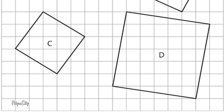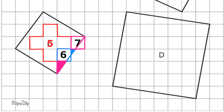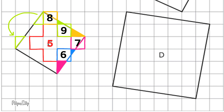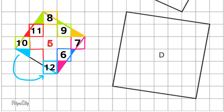To find the area in square units for Squares C and D, I'll use the same strategy of decomposing and composing. Here you can see that the area for Square C is 13 square units.